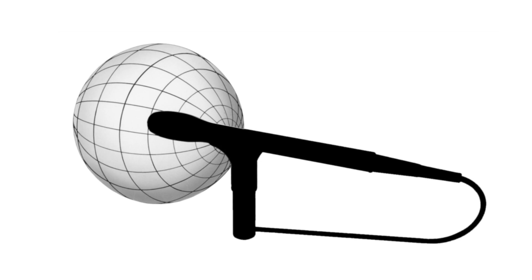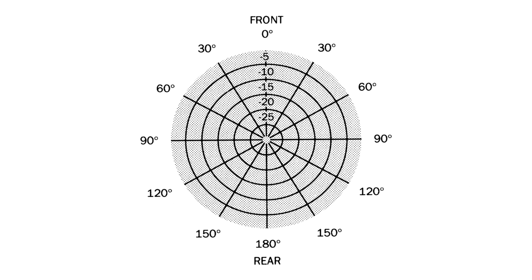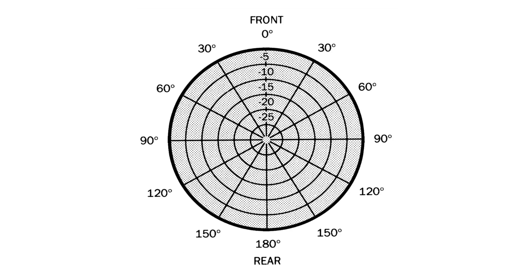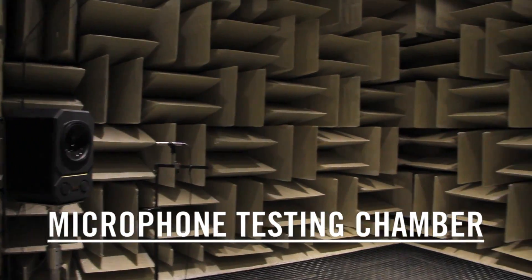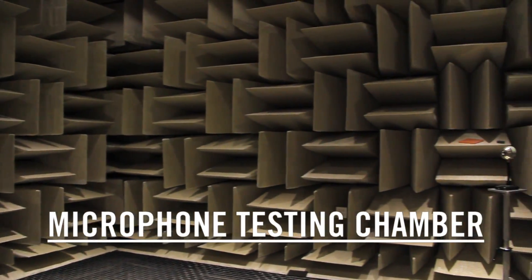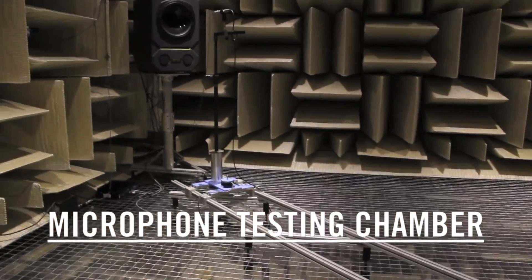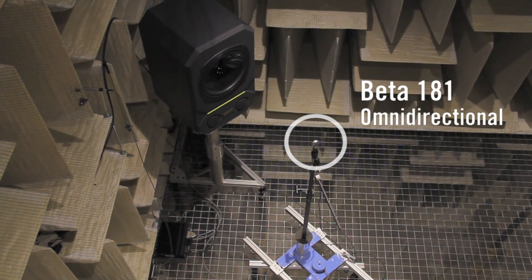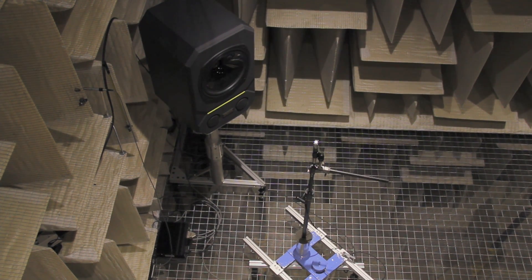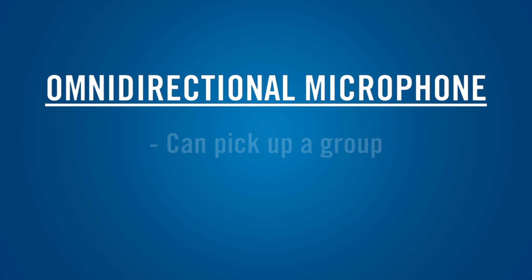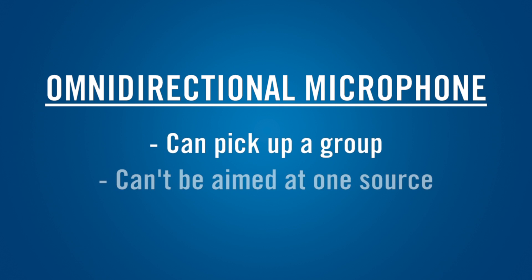An omnidirectional microphone has the same output regardless of its orientation to the sound source. Its polar pattern is a sphere — on paper, it looks like a nearly smooth circle. In this demonstration, notice how the sound level remains virtually constant even as the angle between the microphone and the sound source changes. An omnidirectional mic can pick up a group of people sitting around a table, but it can't be aimed to favor one source over another.